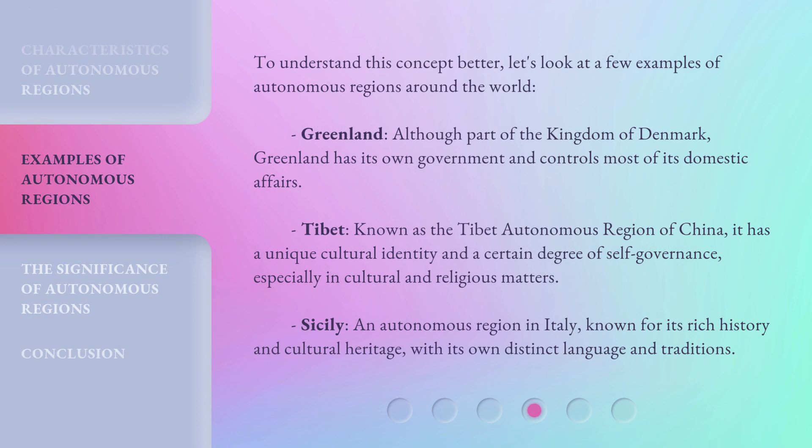To understand this concept better, let's look at a few examples of autonomous regions around the world. Greenland: although part of the Kingdom of Denmark, Greenland has its own government and controls most of its domestic affairs. Tibet: known as the Tibet Autonomous Region of China, it has a unique cultural identity and a certain degree of self-governance, especially in cultural and religious matters. Sicily: an autonomous region in Italy, known for its rich history and cultural heritage, with its own distinct language and traditions.